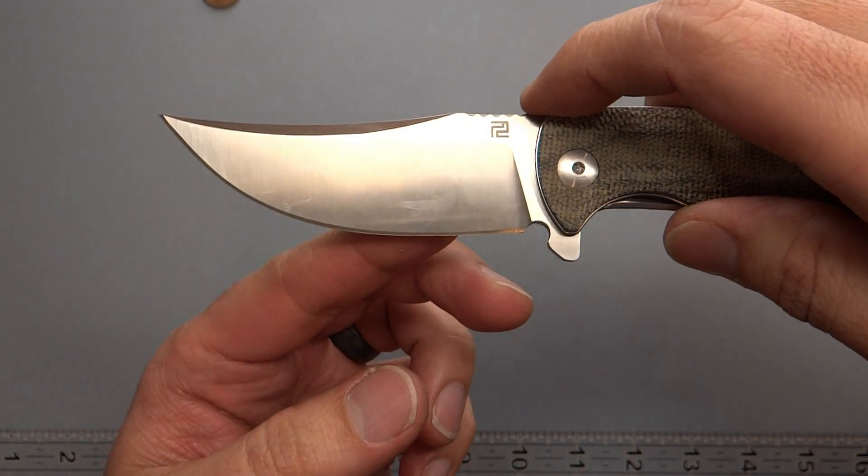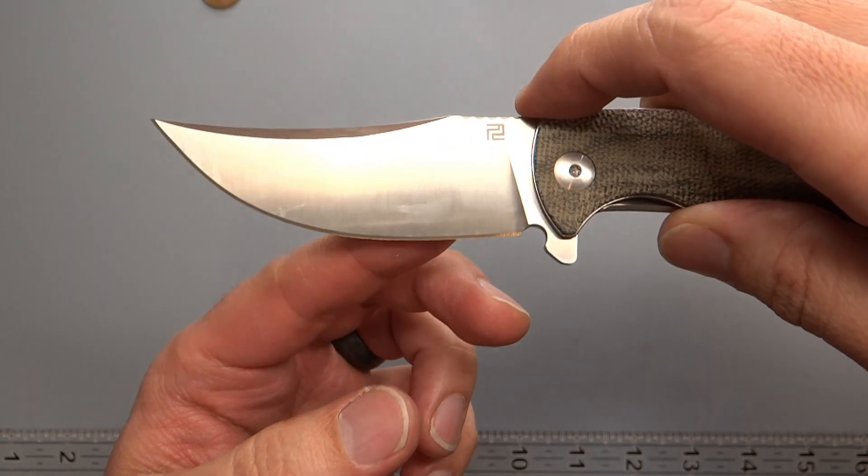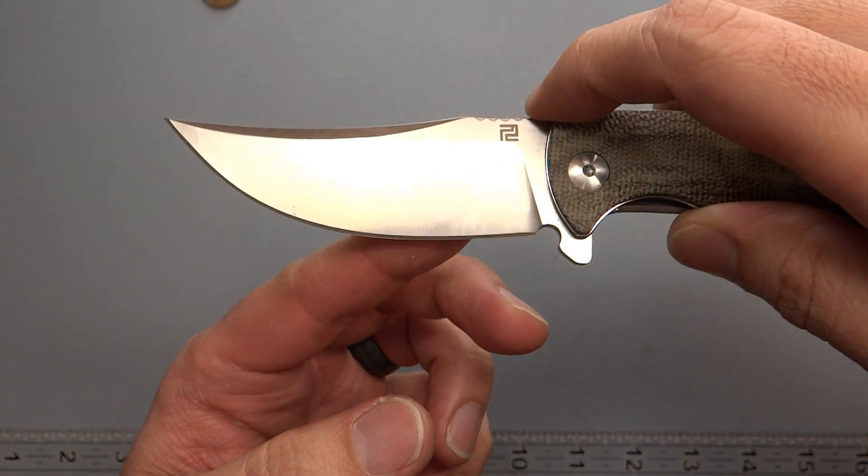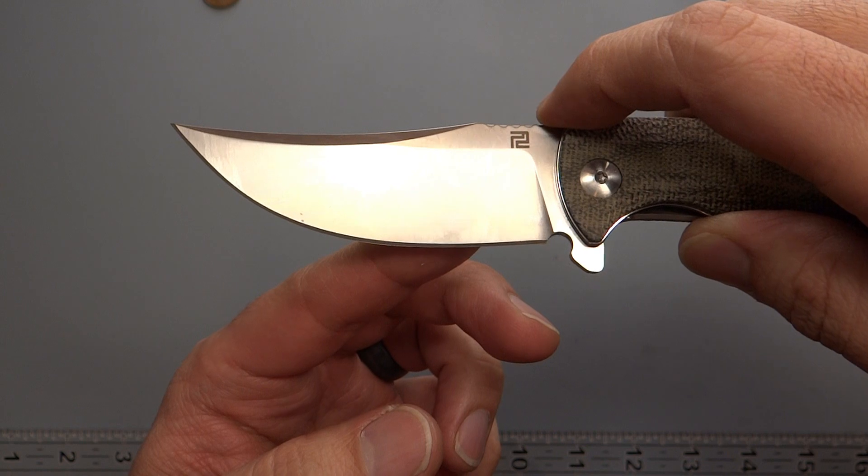It's going to be longer than the actual blade length because of this upswept blade tip. You're going to get a 3.52 inch cutting length on this, and that's going to be against an actual blade length of about 3.3 inches.